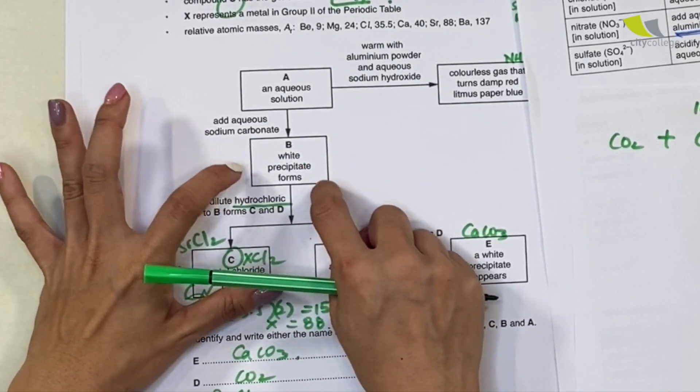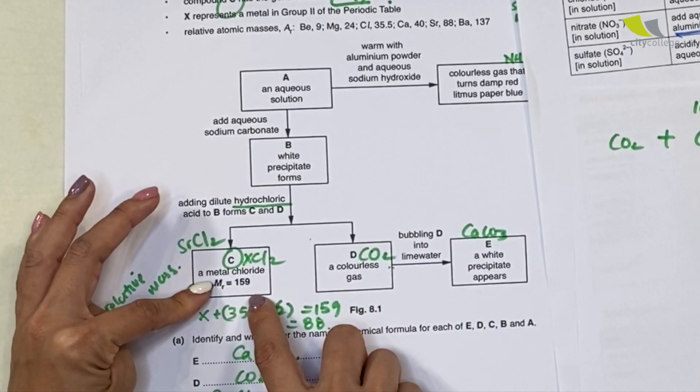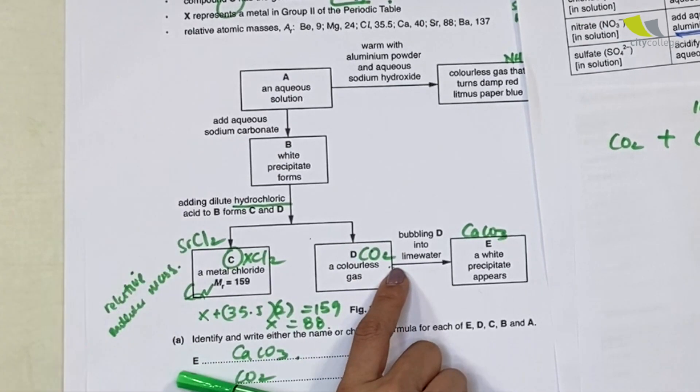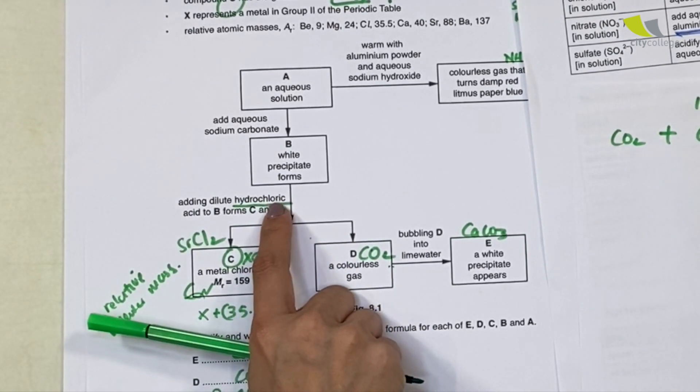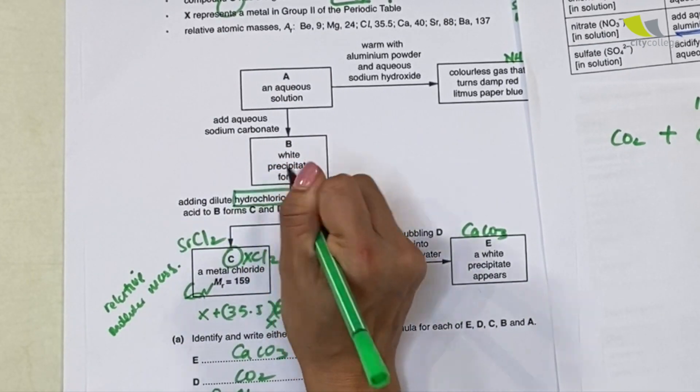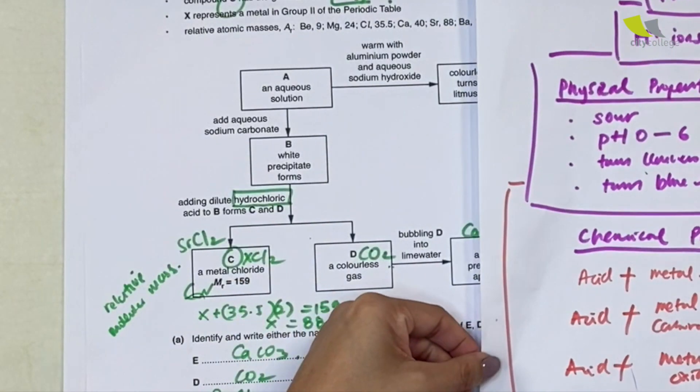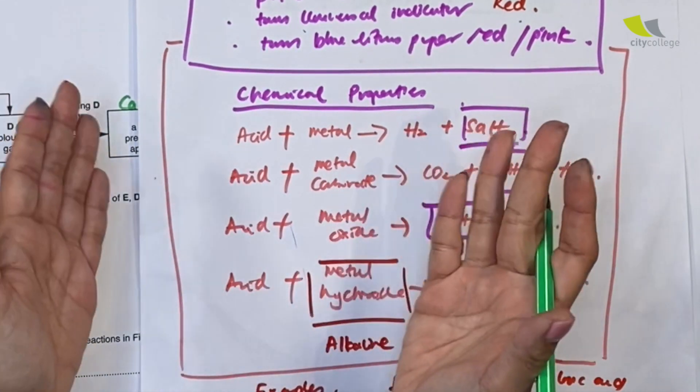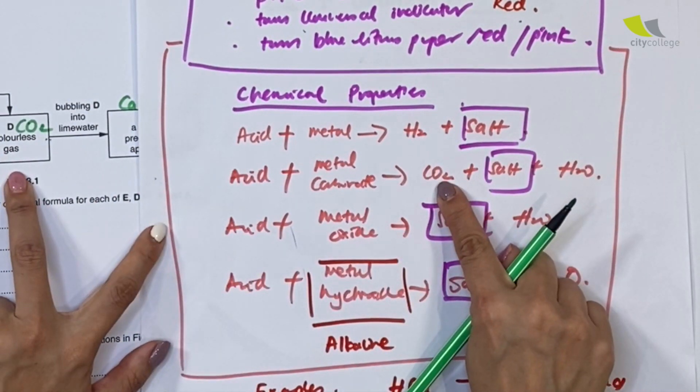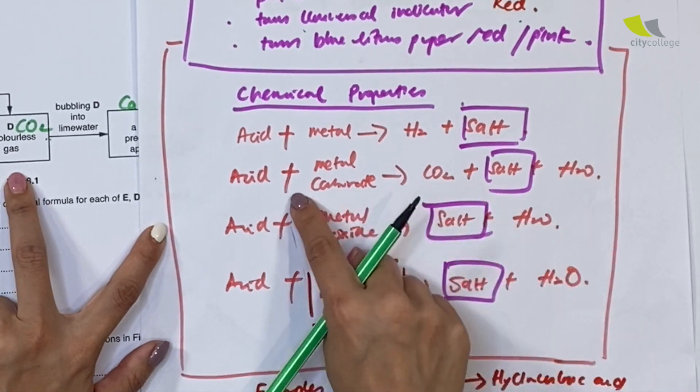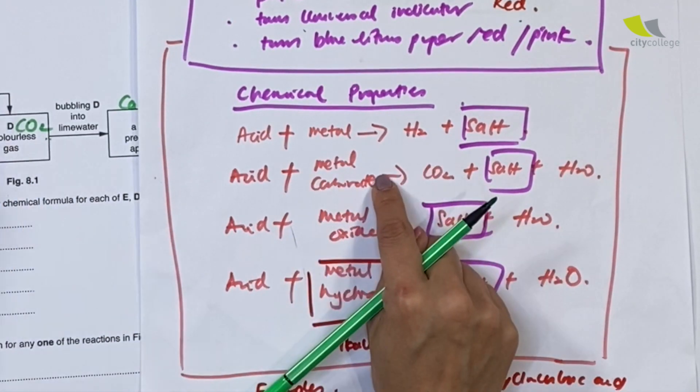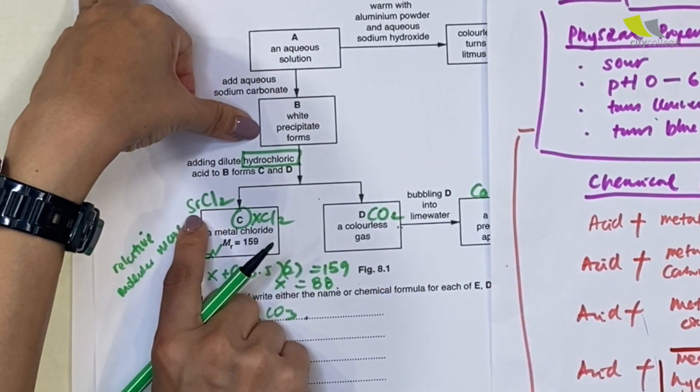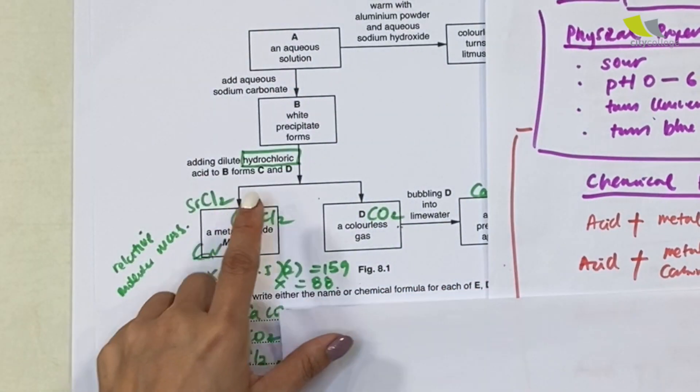Let's do a backwards setup. Now I can find my B and my A. First of all, B over here is a white precipitate formed. We add with acid to give you a salt which is SrCl2 and carbon dioxide. It seems like reactions of acid.